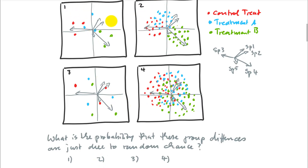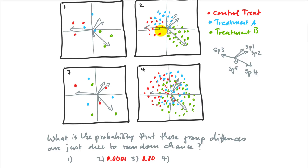Looking carefully, let's start with the one that seems most likely just random scatter. I would say experiment three looks pretty random — this could be an 0.8 chance that this is just noise. And the one most unlikely to be random noise — I would say it's this one, where the green cluster is completely separated from the blue and the red. That would not happen by random chance, so I'd give it a 0.0001 or even less.